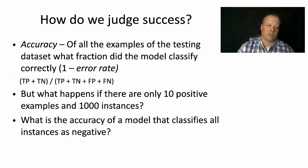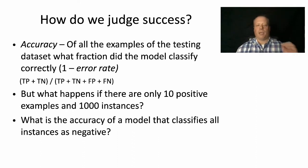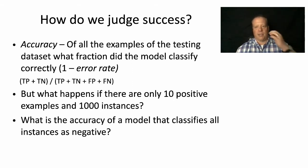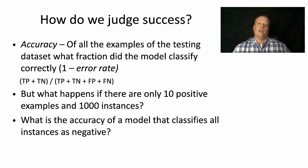One way to judge whether a machine learning model is successful is by accuracy — simply asking: of all the examples in the testing dataset, what fraction did the model classify correctly? This is the same as one minus the error rate. To define accuracy, we need the notions of true positive, true negative, false positive, and false negative. A true positive means your model predicted a positive event — like 'yes, the person will respond to the offer' — and they actually did. A true negative means the model predicted they won't respond, and in fact they did not. A false positive means the system predicted they would respond but they didn't, and a false negative means the system predicted they would not respond but they did.